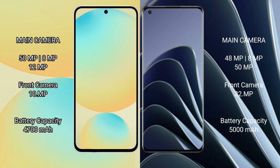The Samsung Galaxy S24 FE features a rear triple camera setup: 50MP, 8MP, and 12MP, with a 10MP front camera. The OnePlus 10 Pro also features a rear triple camera setup: 48MP, 8MP, and 50MP, with a 32MP front camera.